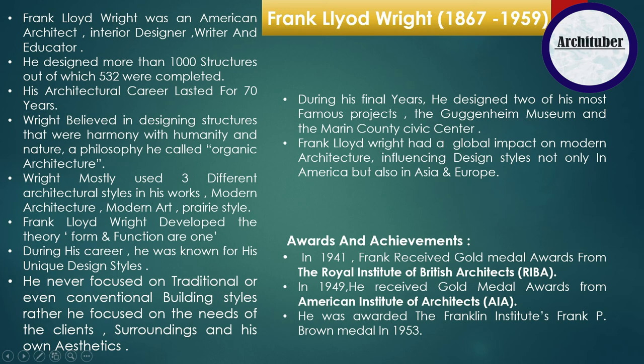Wright mostly used three different architectural styles in his works: modern architecture, modern art, and prairie style. In terms of awards and achievements, in 1941 he received the Gold Medal from the Royal Institute of British Architects, in 1949 he received the Gold Medal from the American Institute of Architects, and he was awarded the Franklin Institute's Frank P. Brown Medal in 1953.